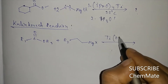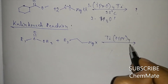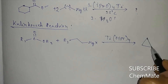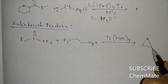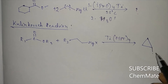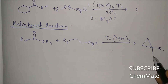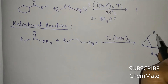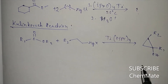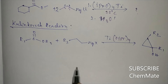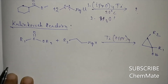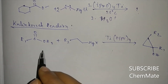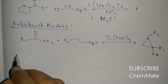The product will be a cyclopropanol — specifically R1, OH, R2 — and an epoxide will be the product. Now, what is the mechanism of this reaction?